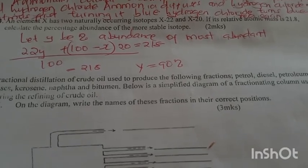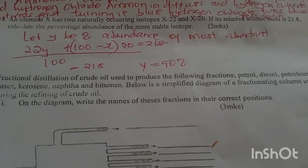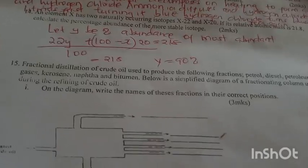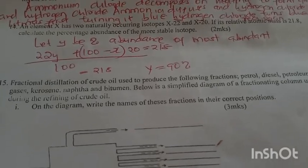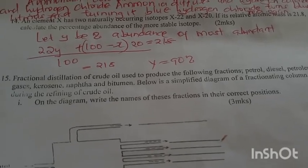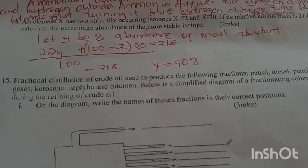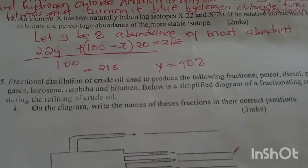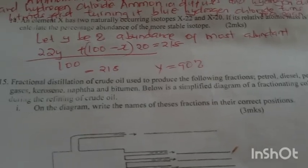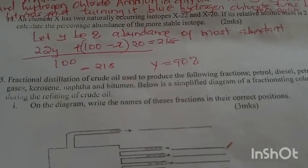Element X has two naturally occurring isotopes, X-22 and X-20. Its relative atomic mass is 21.8. Calculate the percentage abundance of the more stable isotope. Let Y be the abundance of the most abundant isotope. 22Y + (100 - Y) × 20 = 21.8 × 100. You're going to get 90 percent.